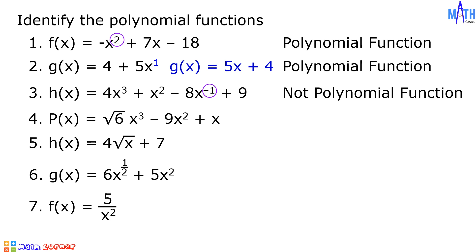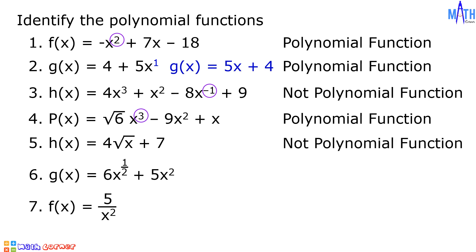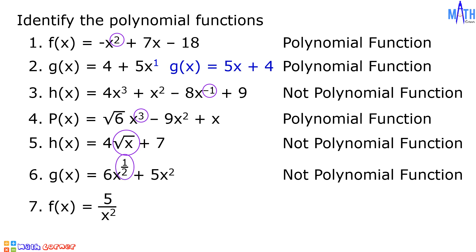Number 4: P of X equals square root of 6X cubed minus 9X squared plus X — this is a polynomial function of degree 3. Number 5: H of X equals 4 square root of X plus 7 — this is not a polynomial function; the variable is under the radical sign. Number 6: G of X equals 6X raised to 1 half plus 5X squared — this is not a polynomial function; there is a fractional exponent. Last number: F of X equals 5 over X squared — this is not a polynomial function since the variable is located in the denominator.